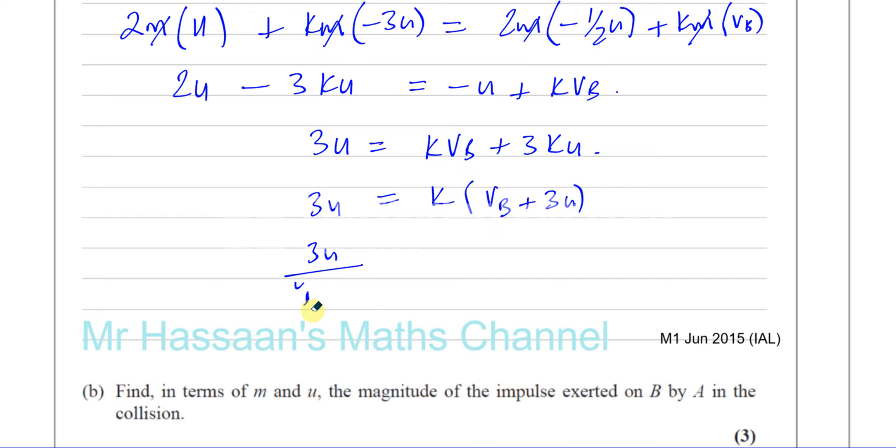And that's what K is. Now, I know VB is definitely greater than zero because it's moving towards the right positive. For sure, the direction was reversed. So that's definitely a positive value.